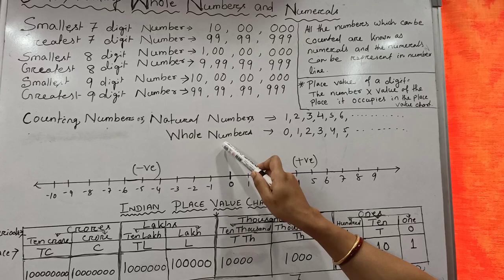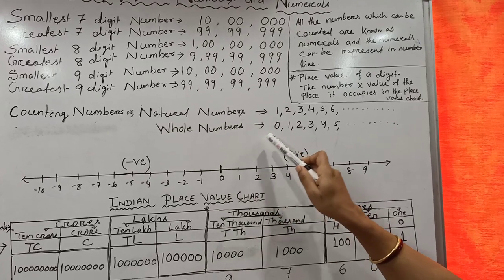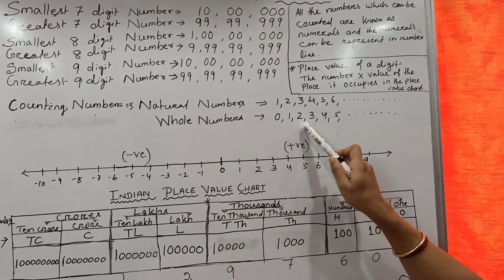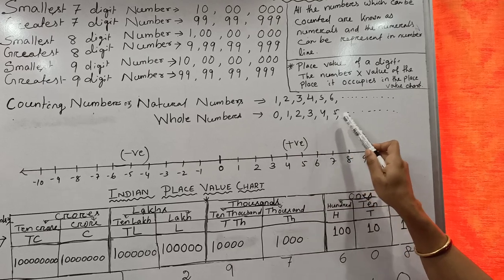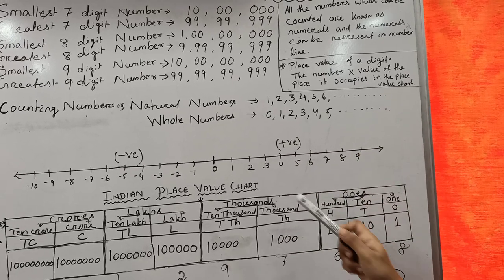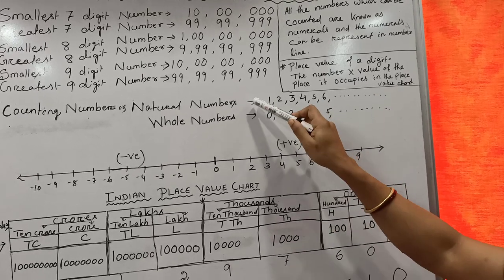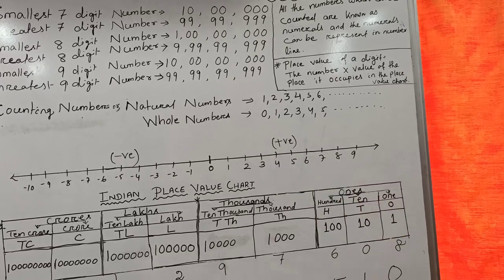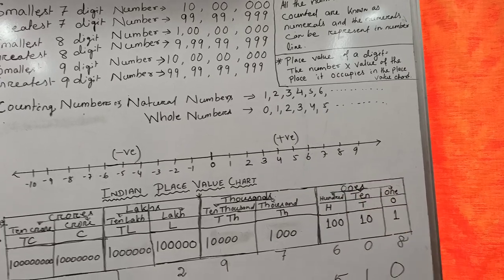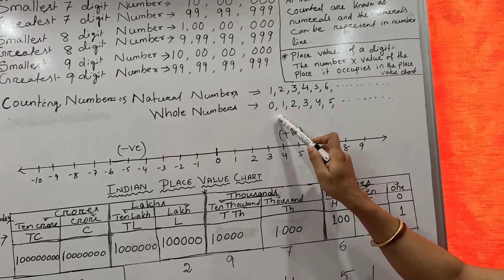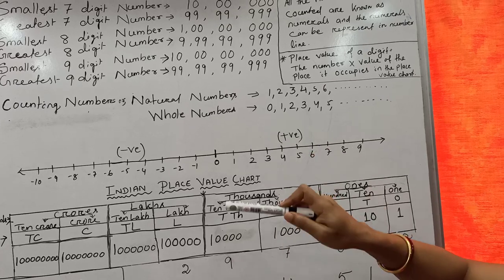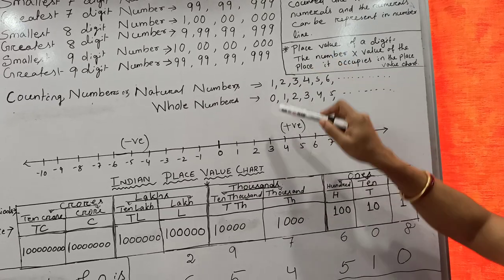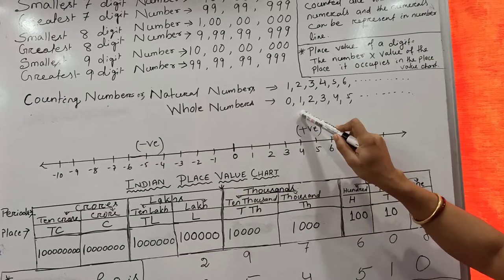What is a Whole Number? Whole Numbers start from 0: 0, 1, 2, 3, 4, 5, and so on. What is the difference between Natural Numbers and Whole Numbers? Natural Numbers start from 1 and Whole Numbers start from 0. So the smallest Natural Number is 1 and the smallest Whole Number is 0.